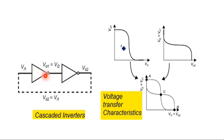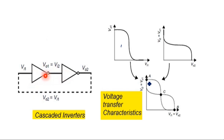Looking at the voltage transfer characteristic curves of these two inverters: this is the first CMOS inverter characteristic curve where input equals zero and output equals logic high. The opposite is the case for the second inverter. When we cascade these two inverters, their characteristics are merged in a way that forms a loop.